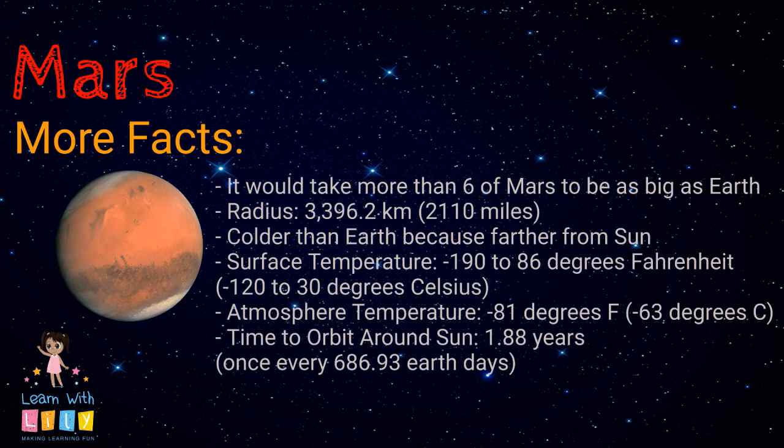It must be pretty hot, huh? It actually is colder than Earth because it is further away from the Sun. Oh. Yep. The temperature on the surface is about negative 190 degrees to about 86 degrees Fahrenheit. And how about the temperature of the atmosphere? That's about negative 81 degrees Fahrenheit.